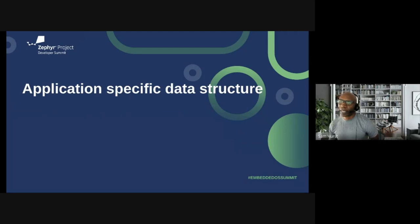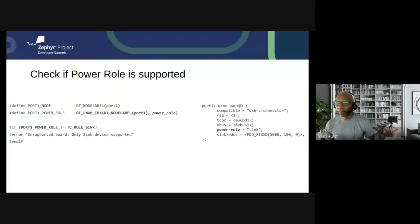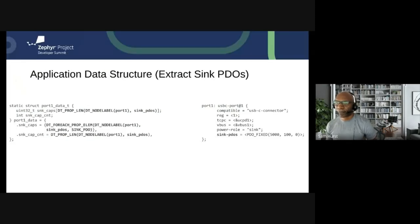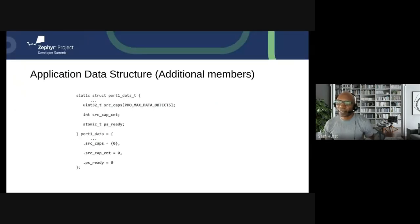Now we move on to the application-specific data structure. Your application should check the Power Role parameter in the device tree to verify that this Type-C port is supported — done by comparing the Power Role parameter to the TC_ROLE_SINK macro. The Sink PDOs parameter in the device tree should be extracted and saved in the data structure. Because this is a sink device, the application will at some point receive the source capabilities, which should also be stored in the data structure.